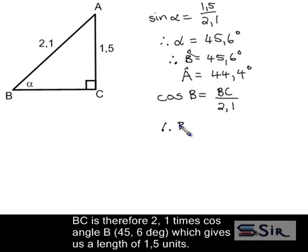BC is therefore 2.1 times cos angle B, which is 45.6 degrees. And this gives us a length of 1.5 units.